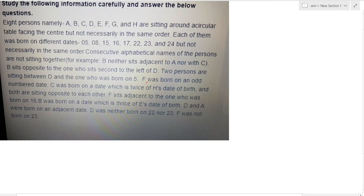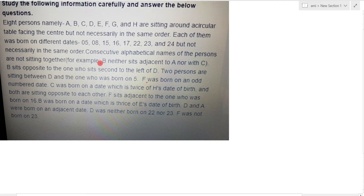8 persons namely A, B, C, D, E, F, G and H are sitting around a circular table facing the center, but not necessarily in the same order. Each of them was born on different dates 5 to 24, but not necessarily in the same order. 6 consecutive alphabetical names of the persons are not sitting together. For example, B neither sits adjacent to A nor with C. This is one of the important constraints.